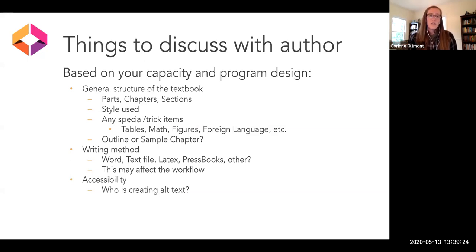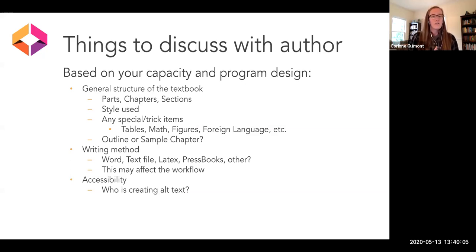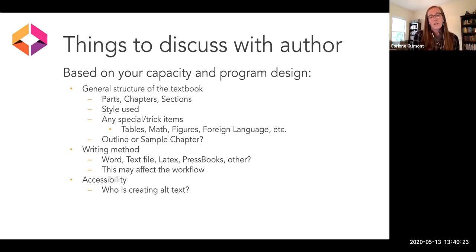If they can provide any sort of outline or sample chapter early on — if you know their book will have 20 chapters split into five sections — that's really helpful because otherwise you might not know if you're getting a book with 10 chapters or 20. If they can give you a rough idea of how many pages a chapter is in a Word document, that can give you an idea of the length you're dealing with. Another important thing that leads to the workflow idea is: how are they writing? Is it Microsoft Word? Is it a text file? Is it LaTeX? Pressbooks? Something else? This really changes the workflow. If you're using Pressbooks as your publishing platform, it's easiest if authors are willing to edit directly in Pressbooks, but sometimes they already have a finished manuscript in Microsoft Word, so you have to think about how to get those files into Pressbooks — and is that something publishers will do or the author?